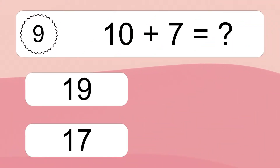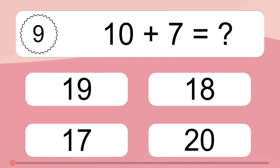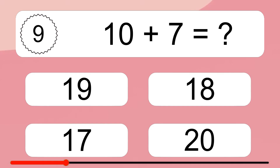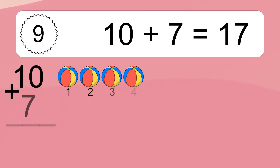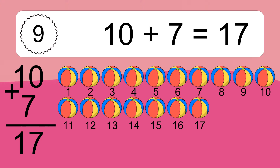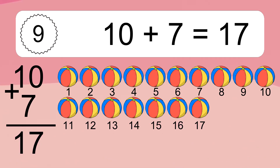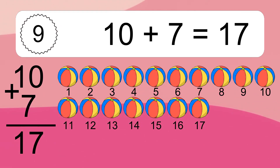10 plus 7 equals what? 10 plus 7 equals 17. Let's count it: 1, 2, 3, 4, 5, 6, 7, 8, 9, 10, 11, 12, 13, 14, 15, 16, 17.